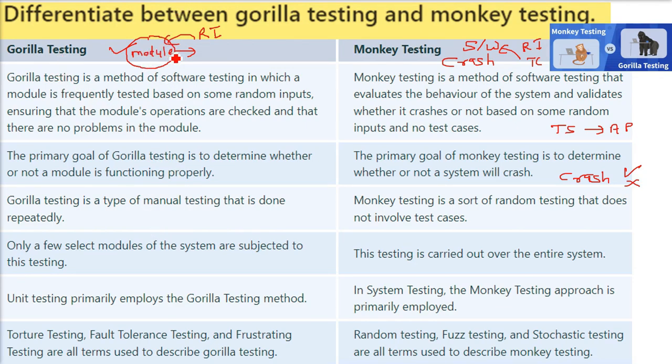Gorilla testing is manual testing where the developer and tester meet and work together repeatedly. Monkey testing is a kind of random testing that does not involve any test cases and any tester can do it.